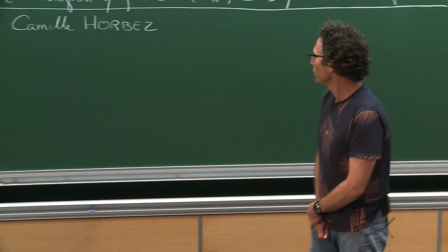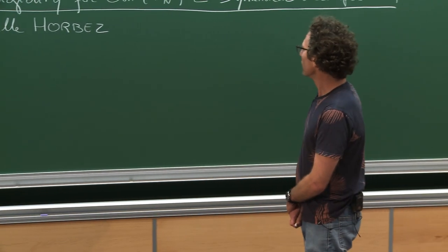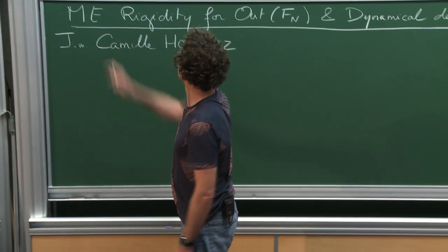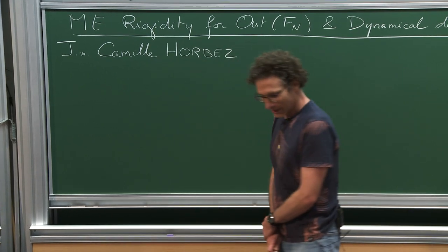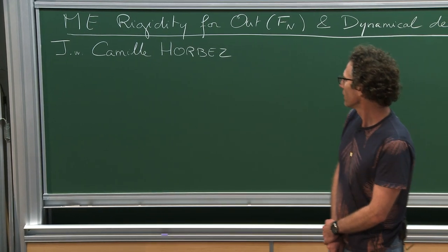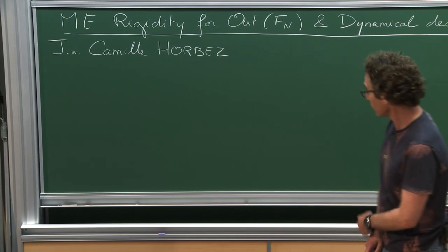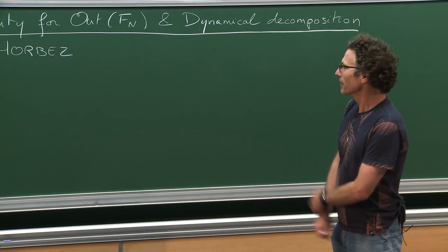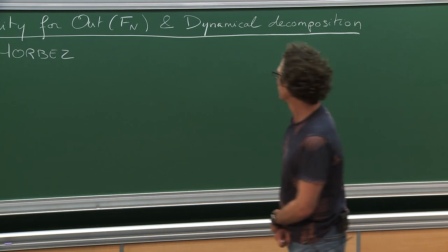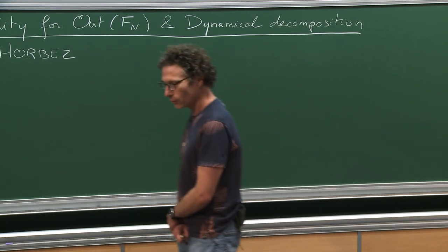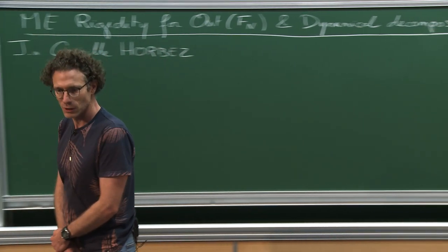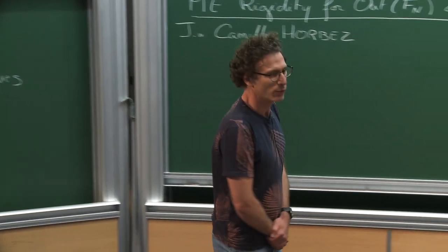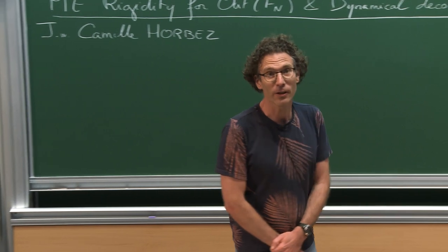I'm going to talk about measure equivalence rigidity — measure equivalence rigidity for Out(Fn) — and that's a joint work with Camille Orbez. A tool that we use in the proof is the dynamical decomposition for a subgroup of Out(Fn), which encodes the various free factors that are invariant under this subgroup.